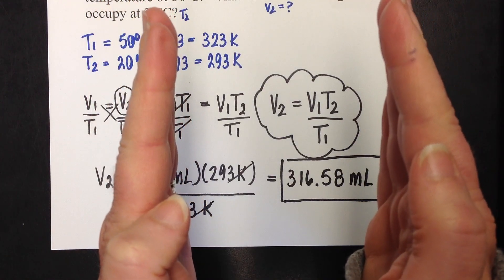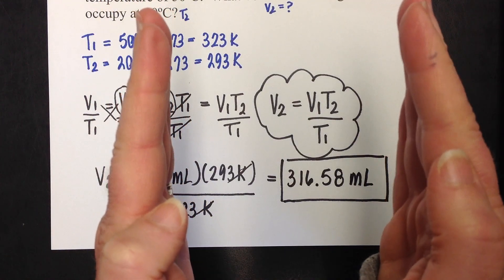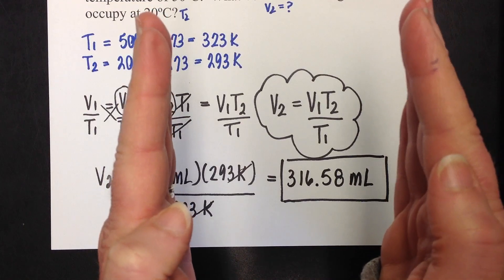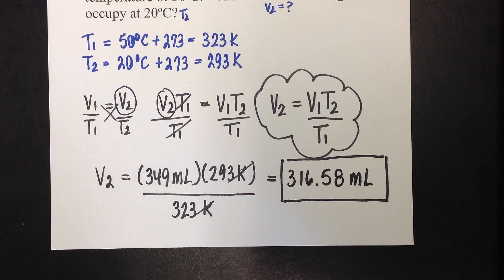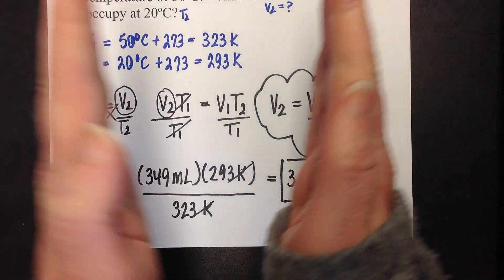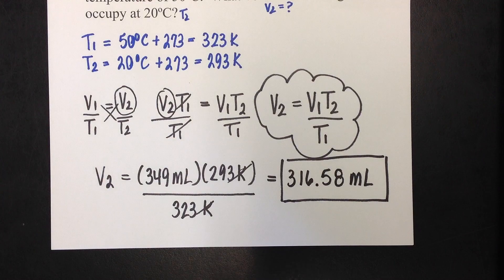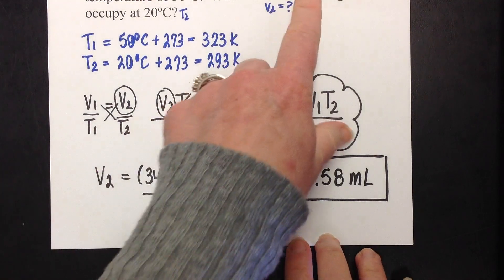The temperature went down. If the temperature goes down, it should make sense that the volume is also going to go down, because when temperature decreases, the gases start moving slower, they come closer together.